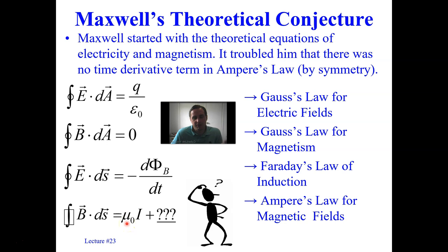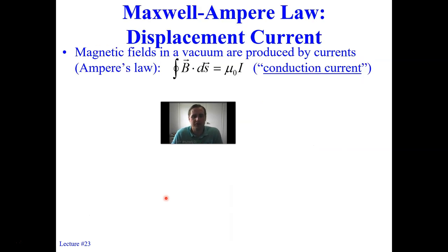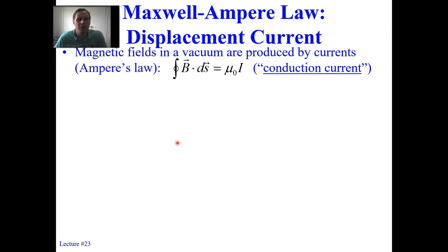What troubled Maxwell was this: if there's a time rate of change term in Faraday's law but not in Ampere's law, the symmetry seemed incomplete — source, no source, no source, source, then time derivative, time derivative, and no time derivatives in the others. This is what troubled Maxwell, and he was wondering if something was missing in the full version of Ampere's law — leading him to the notion of displacement current.